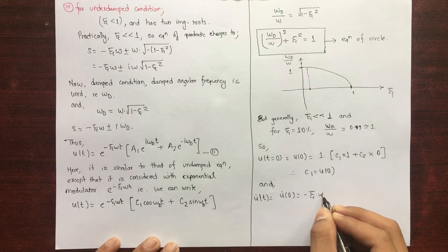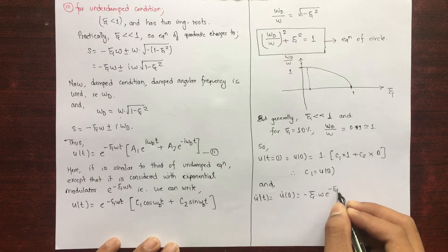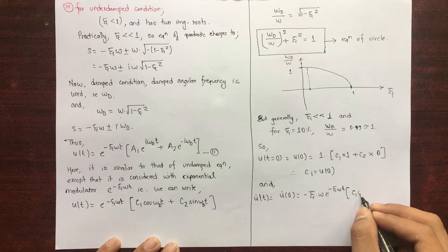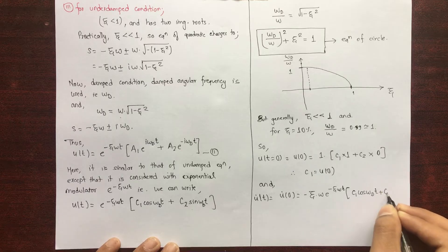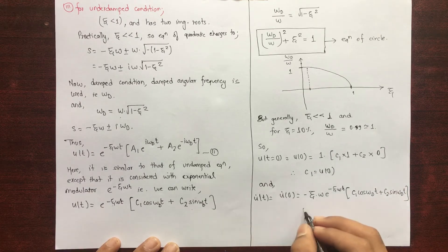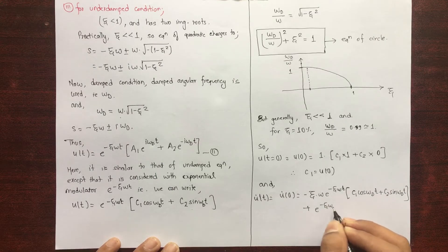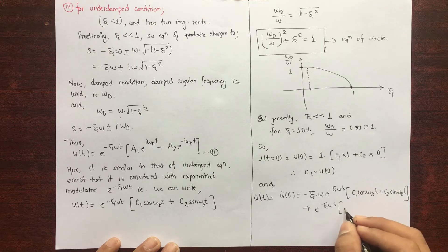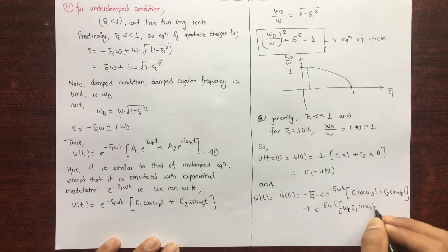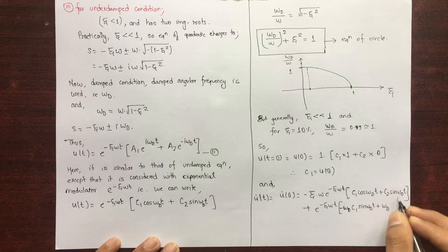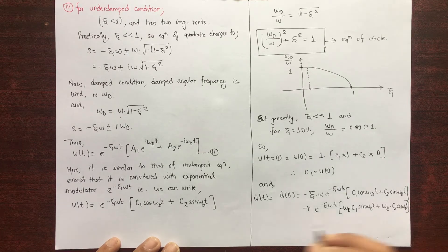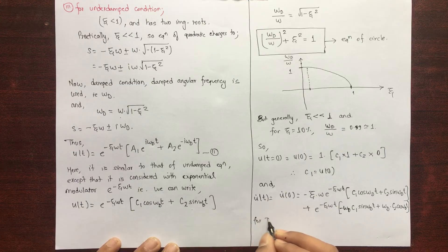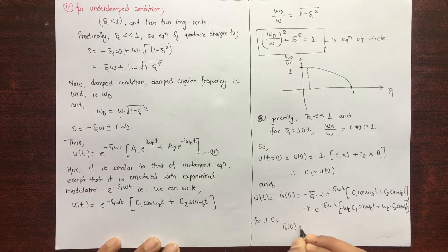Now substituting the initial condition into the first derivative to find C₂: u̇(t) = −ξω·e^(−ξωt)·[C₁·cos(ω_d·t) + C₂·sin(ω_d·t)] plus, applying the product rule, e^(−ξωt)·[−ω_d·C₁·sin(ω_d·t) + ω_d·C₂·cos(ω_d·t)]. Now substitute t = 0 to find the coefficient C₂.